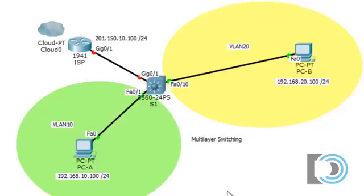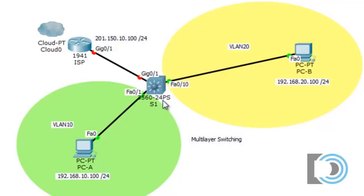Let's see how it works. I have this laid out — we've got PCA with its IP address in VLAN 10, and another PC, PCB, with its IP address in VLAN 20. You can see the switch ports connecting to the multi-layer 3560 switch. Going from gigabit 0/1 we go out to our ISP. We don't need a router because the multi-layer switch handles both routing and switching before going out to the ISP.